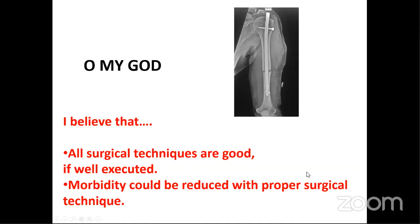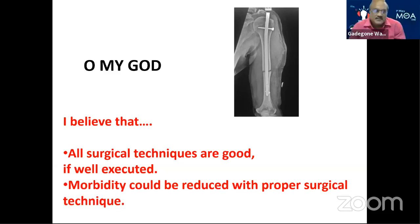Many surgeons doing humerus nailings actually think it is exactly the same procedure as doing a tibia nail or a femur nail. They do not know the importance of the anatomy which differs between these bones and the placement of a very appropriate implant. A femur nail proud by one centimeter does not make much of a difference. But in humerus, surgeons who are not appropriately trained in humerus nailing — this is the reason such complications occur. All surgical techniques are good if well executed; morbidity could be reduced with proper surgical technique.